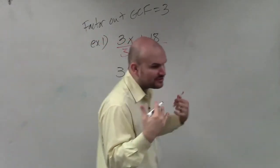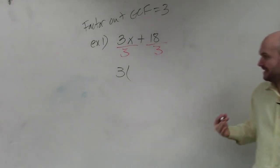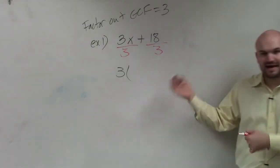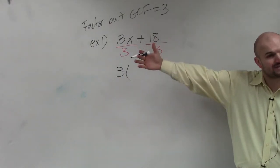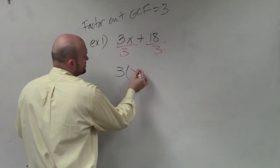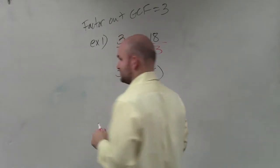Remember what factoring is. Factoring is rewriting an expression as a product, as multiplication. So whenever I divide out, I'm now going to be multiplying by my quotient or the answer of the division. 3x divided by 3 is just going to be left with x. 18 divided by 3 is equal to positive 6.